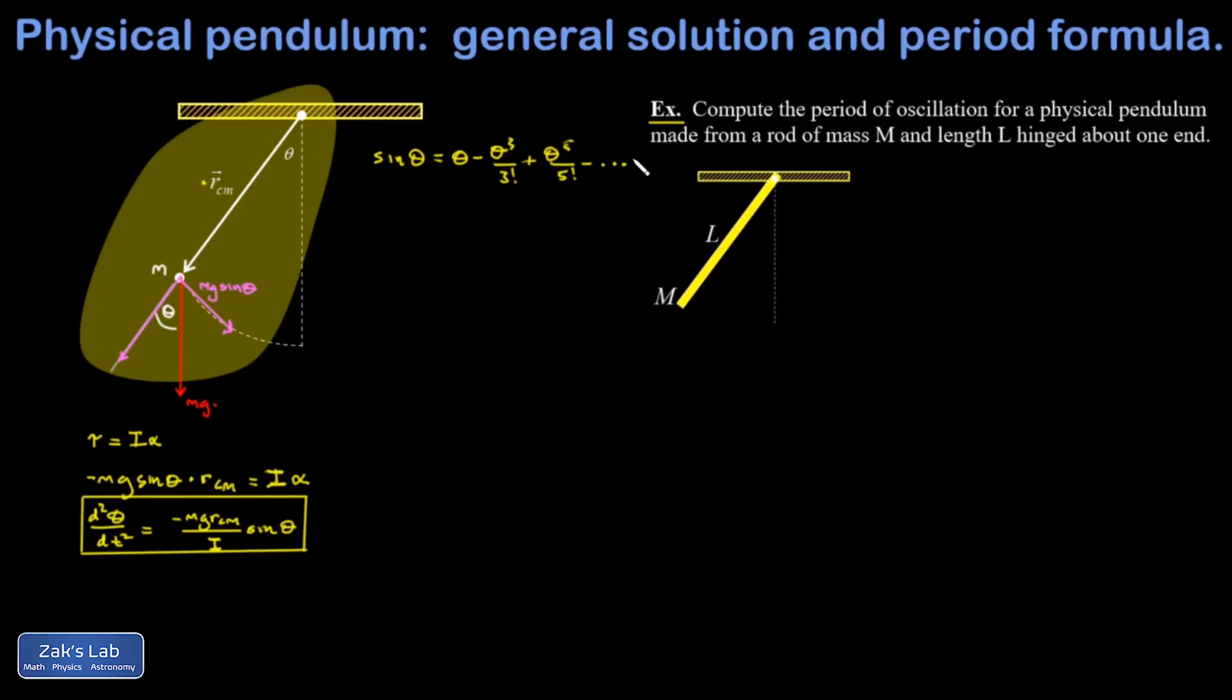And the whole point of this is that if theta is small, higher powers of theta are going to be even smaller. So we can justify truncating this series after the first term and say if theta is sufficiently small, then the sine of theta is approximately just equal to theta.